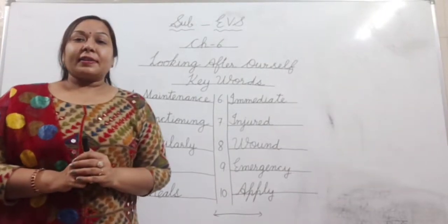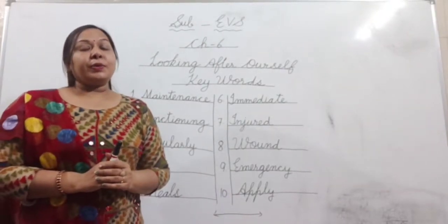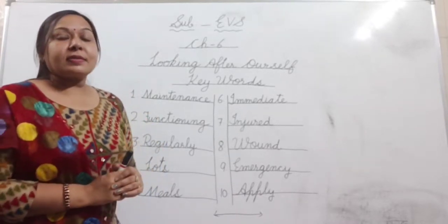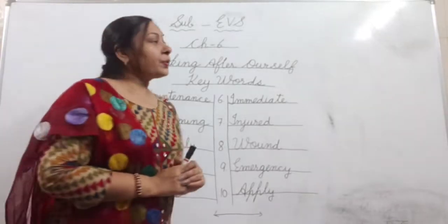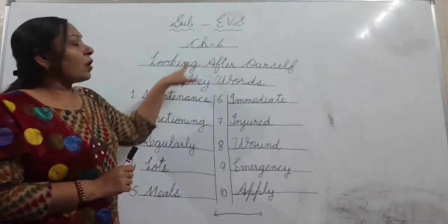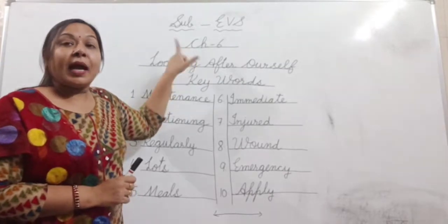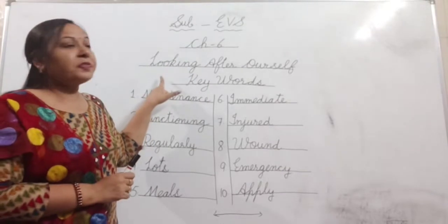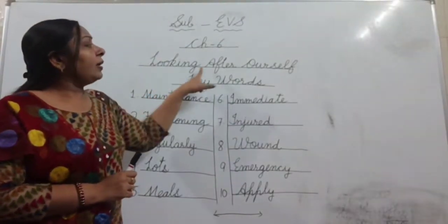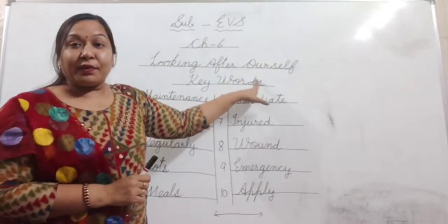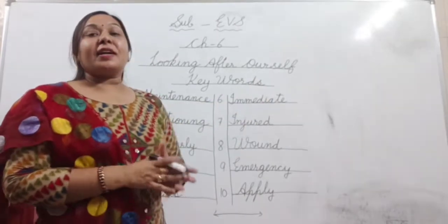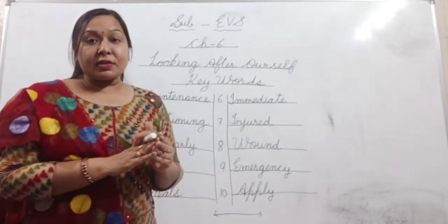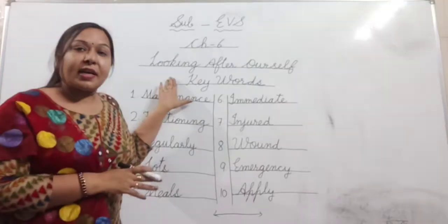Good morning dear children. Welcome you all in today's EBS online class. Dear students, today we are going to do keywords of chapter 6. Aaj hum chapter 6 ke keywords kareinge and the name of the chapter is 'Looking After Ourselves.' We have read the chapter and we have completed its book exercise and question answers also, and keywords are remaining.